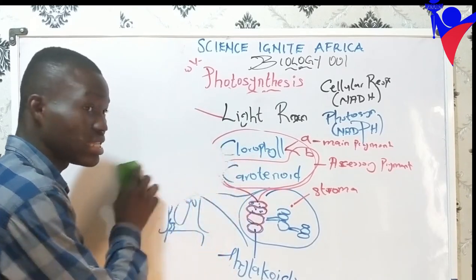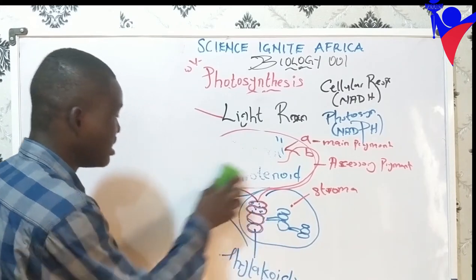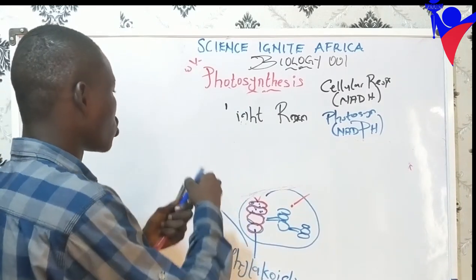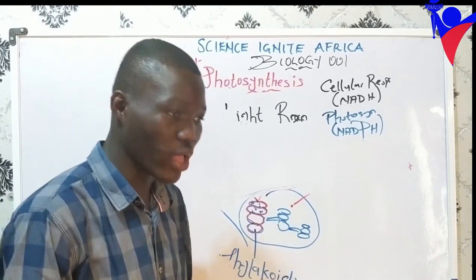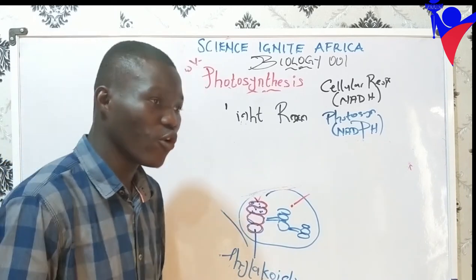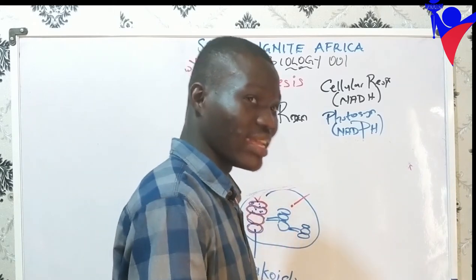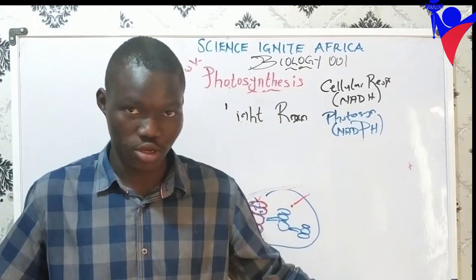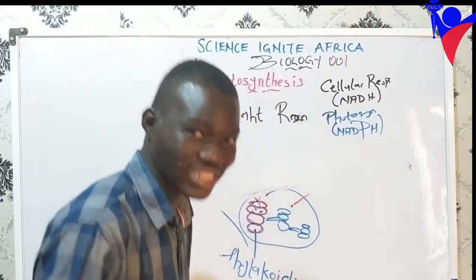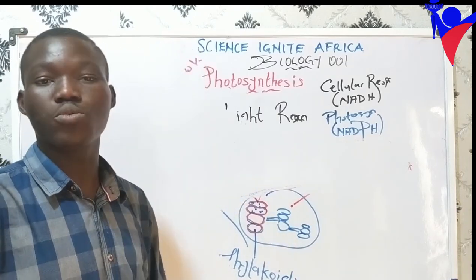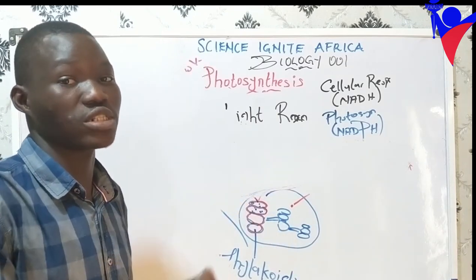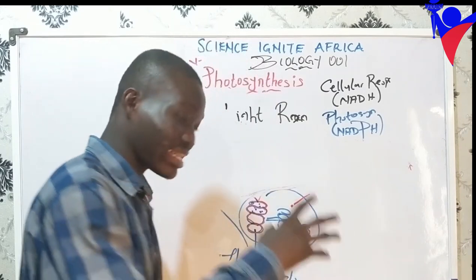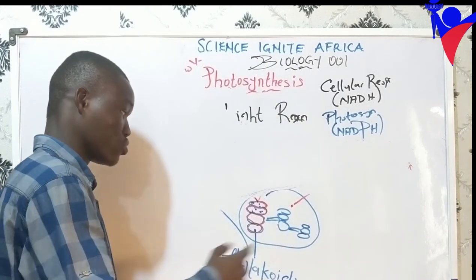What happens on the thylakoid is that electrons are being passed. The light reaction equals an electron transport chain — we are transferring electrons from one electron carrier to another electron carrier. As we transfer electrons, they release energy, and that energy is used to produce temporary energy storage molecules: ATP and NADPH. Those ATP and NADPH then go to the carbon cycle to fix CO2.